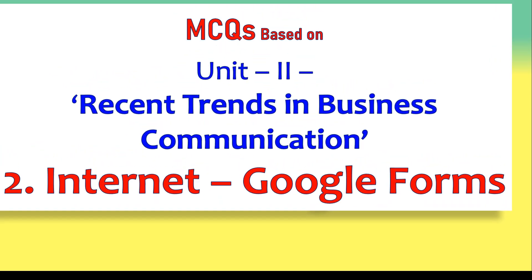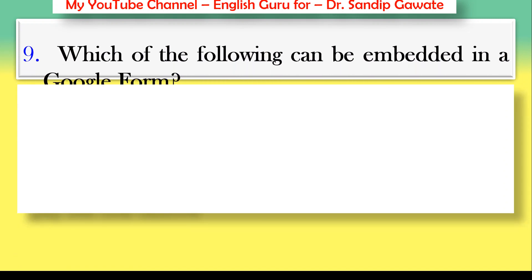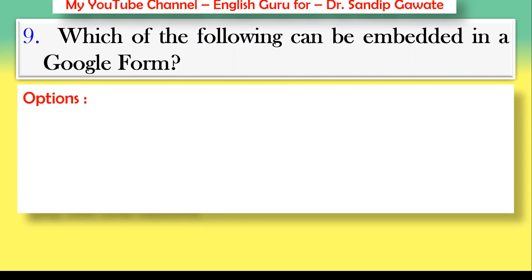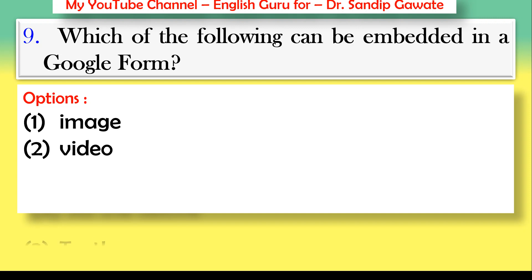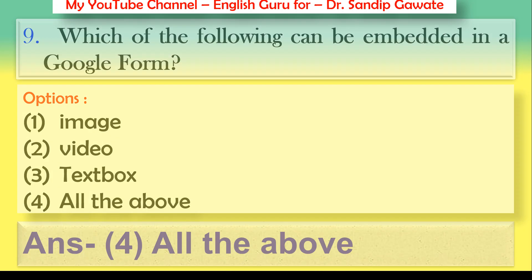The next MCQs are based on Google Forms — unit number two, recent trends in business communication. I request all students to like, share, and subscribe the channel. Question 9: Which of the following can be embedded in a Google Form? Options: image, video, text box, or all of the above. The correct answer is option number four — all of the above.